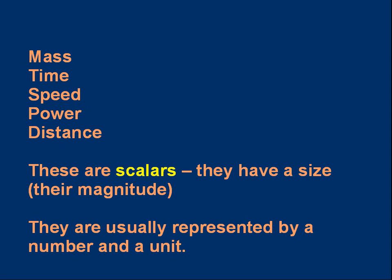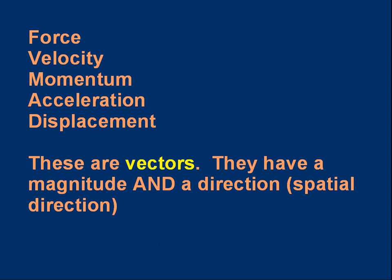So if these are scalars, what makes the other things vectors? Force, velocity, momentum, acceleration, displacement. If you don't recognize some of these, I'll be explaining what they mean shortly. All of these are vectors. They have a magnitude, a size, and as well as a magnitude, they have a direction in space. That means they point in a particular direction. Spatial direction would be a good way of saying it. They have a spatial direction.